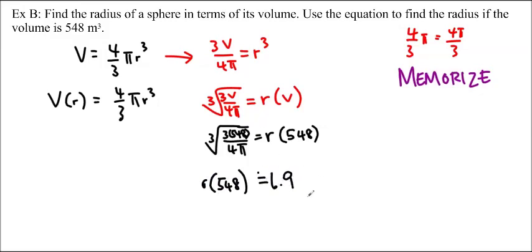And this is in meters because the original question says meters cubed. So if it's a word problem, make sure you have a word solution. The radius is approximately 6.9 meters. And there you go. So basically this unit, or this section was just about switching the x and the y in order to find the inverse and being able to find the domain and the range. Thanks. And I'll see you in class.